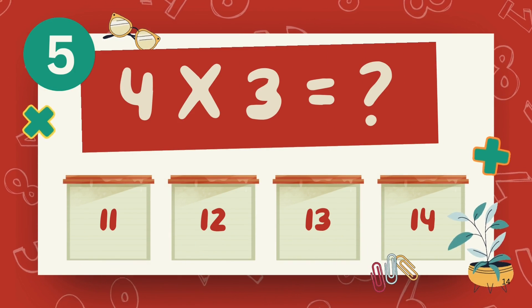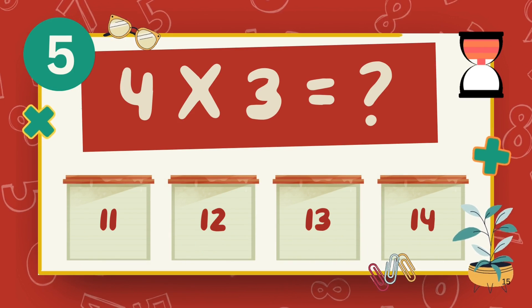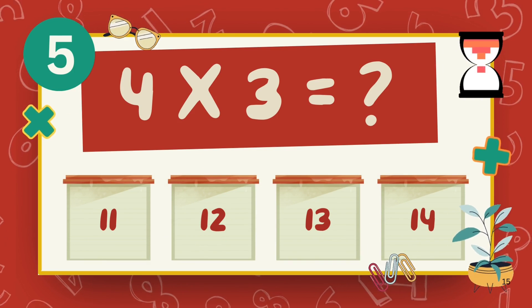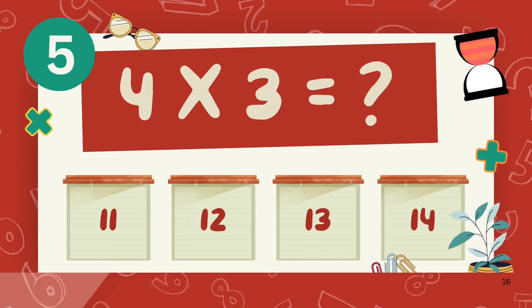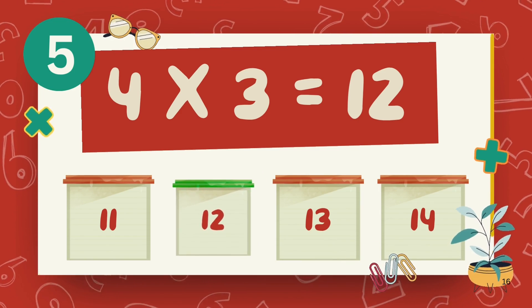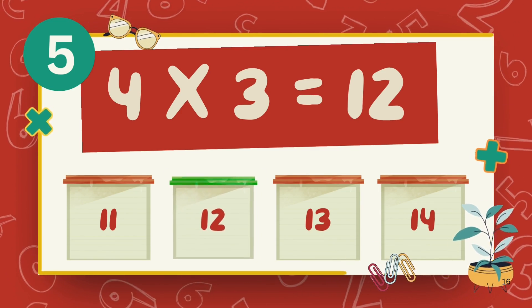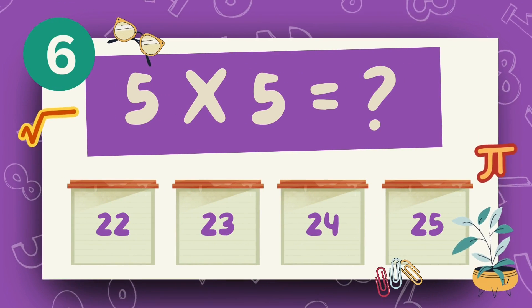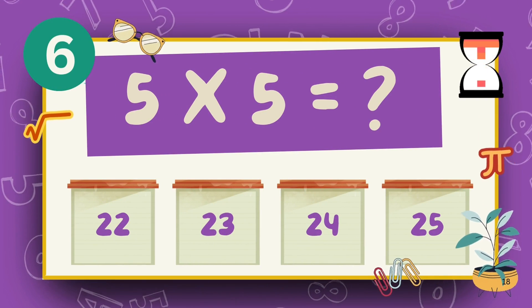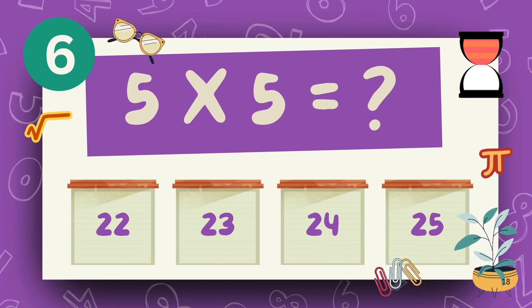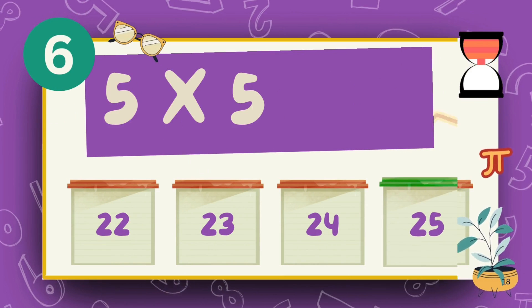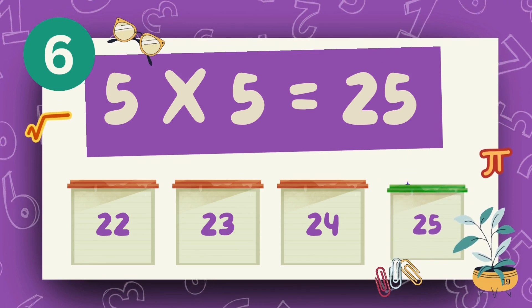What is 4 multiply 3? The answer is 12. What is 5 multiply 5? The answer is 25.